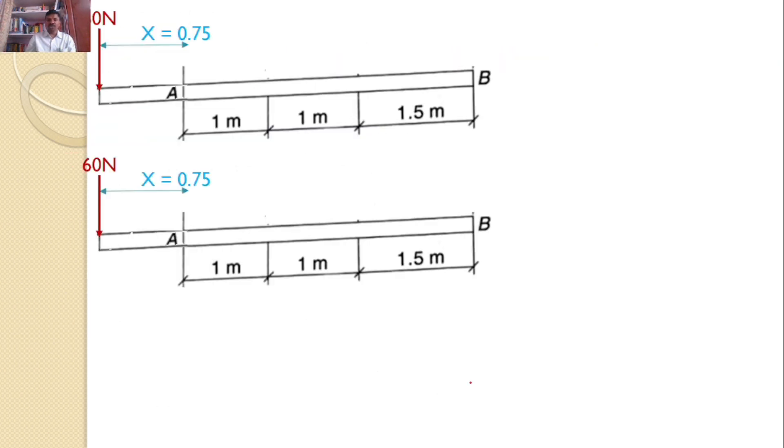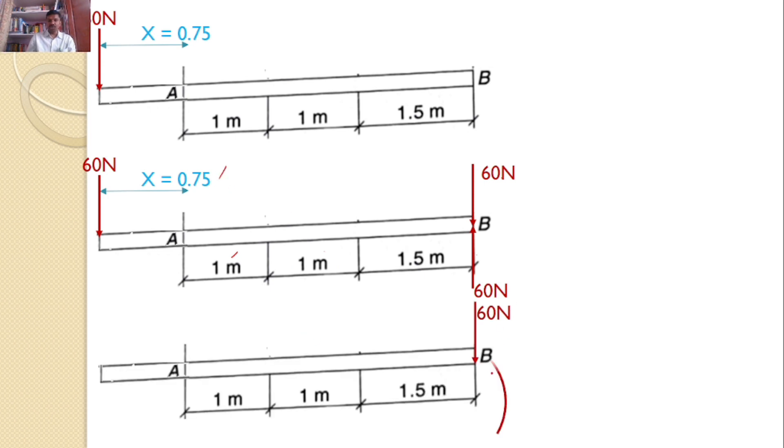what I will do, I will introduce 60 and 60 at point B. So this is 60 and this is 60, these two will introduce a moment and the distance is, the total distance is 3.5 plus 0.75, 4.25. So this is 60 Newtons and there is a moment, and the moment is 60 into 4.25 which gives the value of 255 Newtons meter. It is the answer for the given problem.